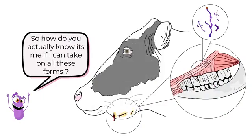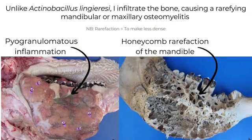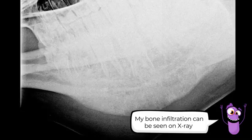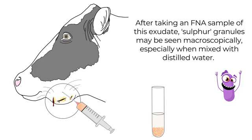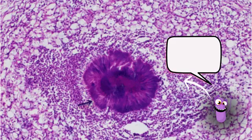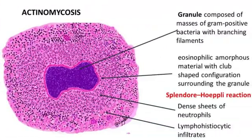So how do we actually know it's me if I can take on all these forms? Unlike Actinobacillus lignieresii, I infiltrate the bone, causing a rarefying osteomyelitis. This can be seen on X-ray as mottled shadowing. Another characteristic feature of this infection is the presence of sulphur granules within the suppurative exudate. After taking an FNA sample, these granules can be seen macroscopically, especially when mixed with distilled water. They can also be seen microscopically — they are essentially bundles of filamentous bacteria and mineralised calcium phosphate, surrounded by eosinophilic Splendore-Hoeppli proteins.